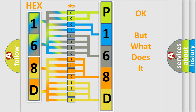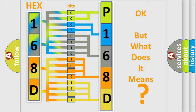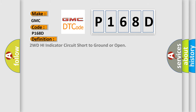The number itself does not make sense to us if we cannot assign information about what it actually expresses. So, what does the diagnostic trouble code P168D interpret specifically for GMC car manufacturers? The basic definition is: 2WD high indicator circuit short to ground or open.